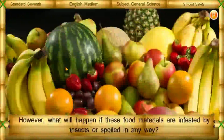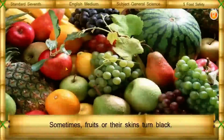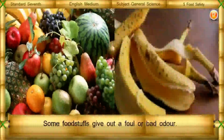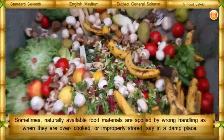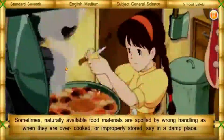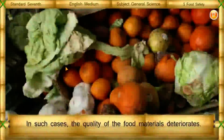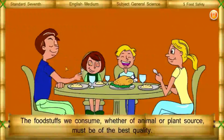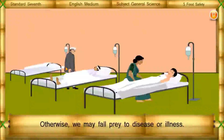However, what will happen if these food materials are infested by insects or spoiled in any way? Sometimes fruits or their skins turn black, and some food stuffs give out a foul or a bad odor. Such food stuffs are not suitable for us to eat. Sometimes naturally available food materials are spoiled by wrong handling, such as when they are overcooked or improperly stored in a damp place. The food stuffs we consume, whether of animal or plant source, must be of the best quality. Otherwise, we may fall prey to disease or illness.